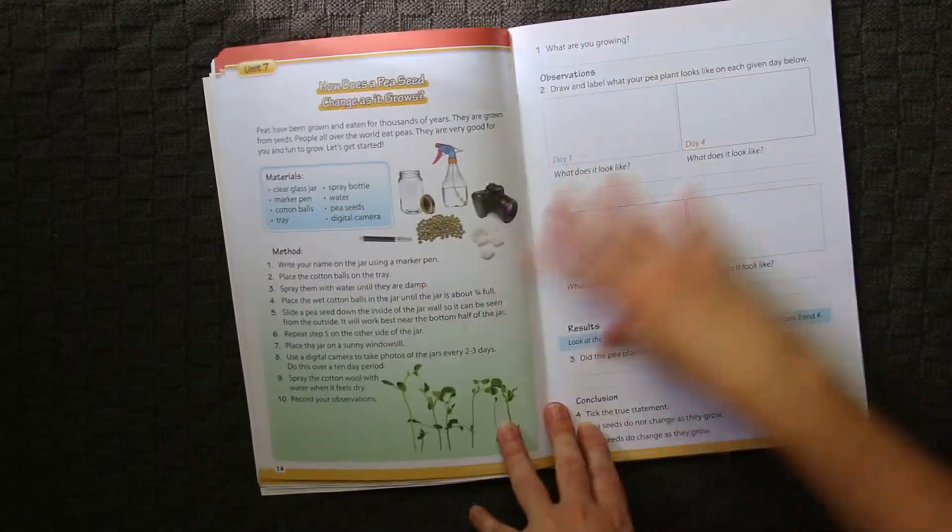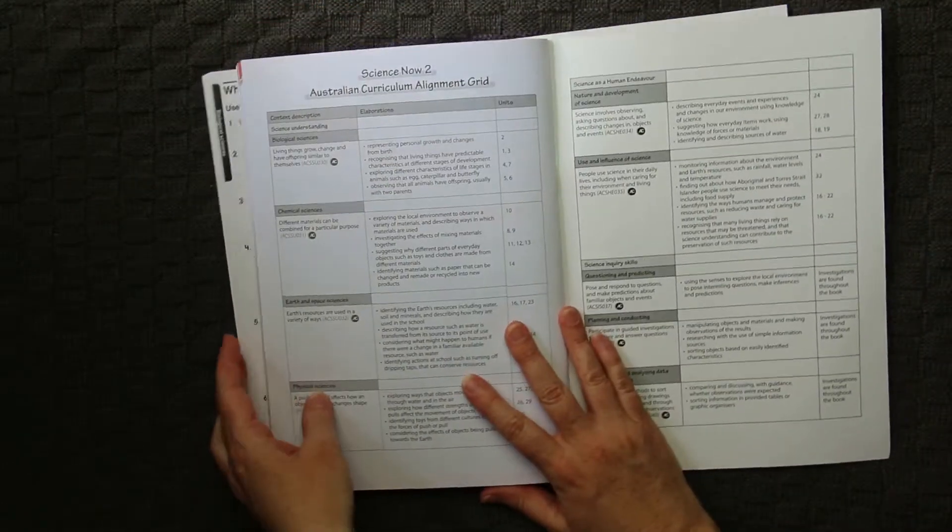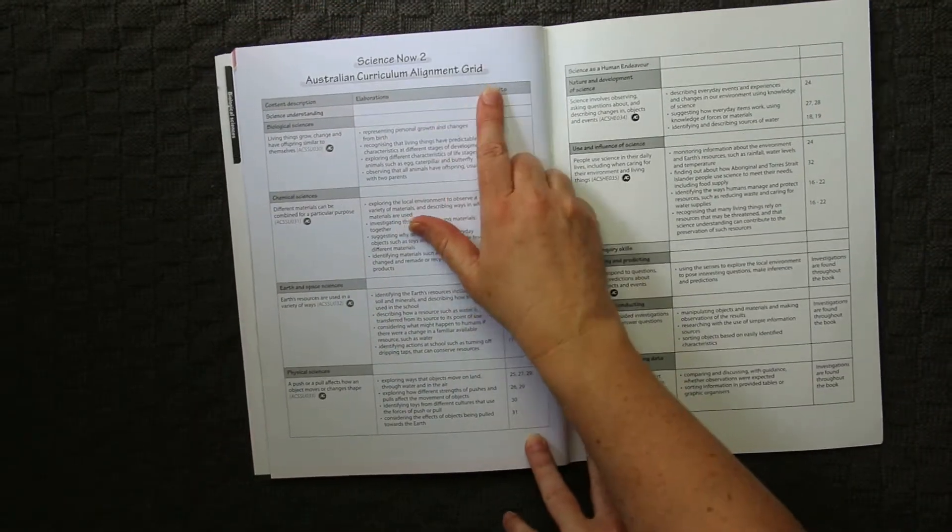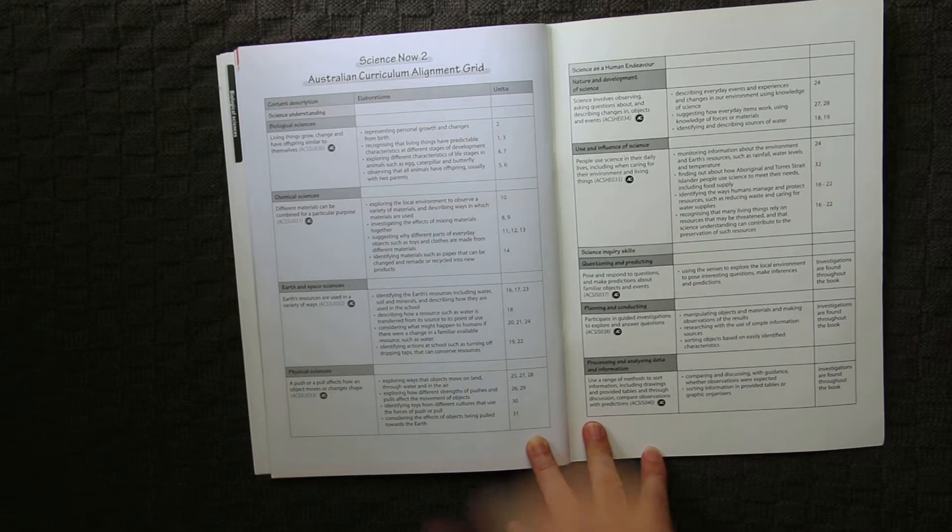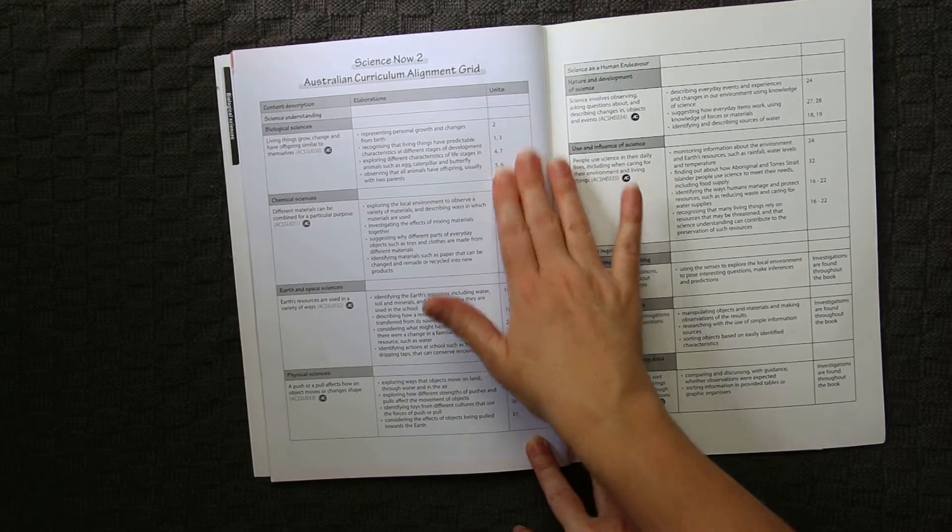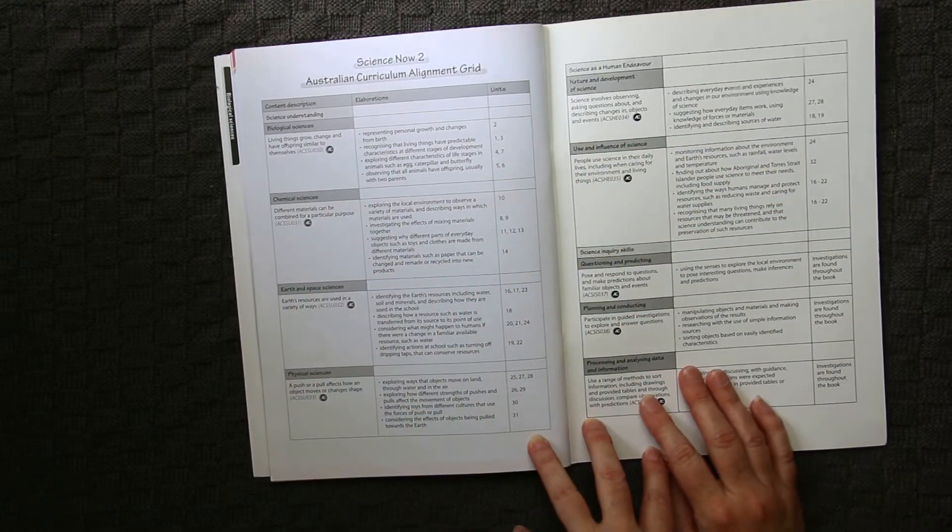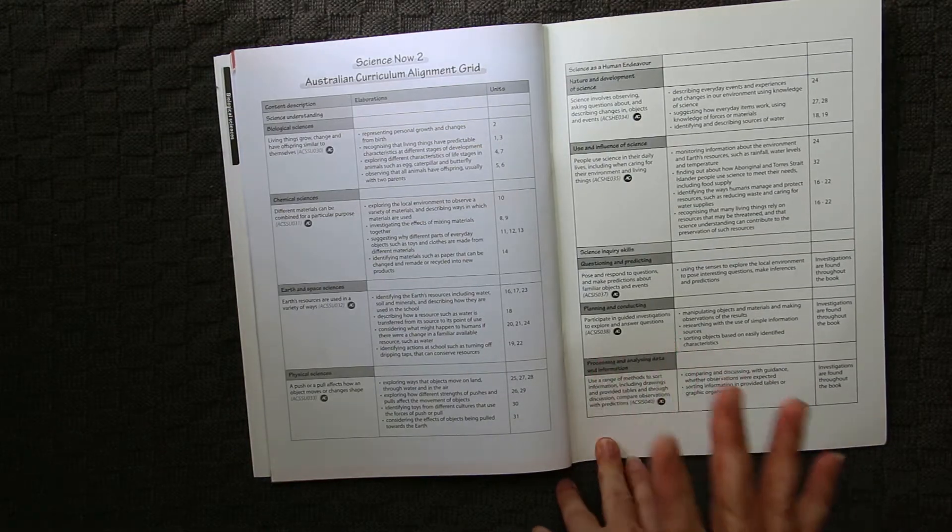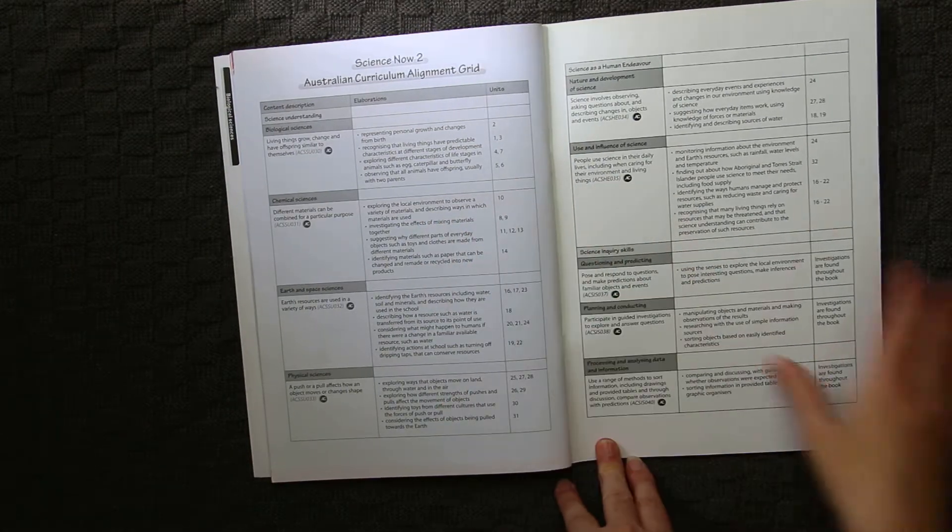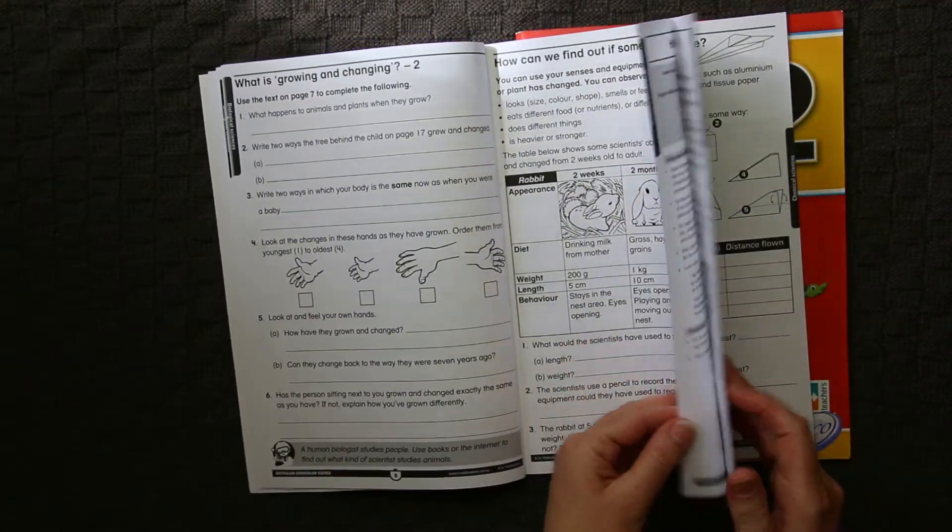It is nice and colorful, so that may be a draw card. The one thing that the back of this book has is the Australian Curriculum Alignment Grid. It actually gives you the outcome codes and what units are covering or working towards those particular outcome codes. If that's important to you, this is actually really handy.